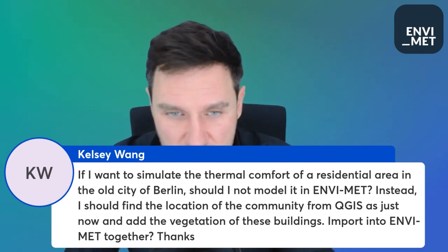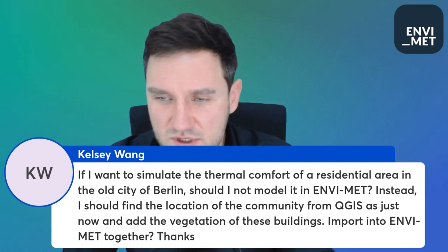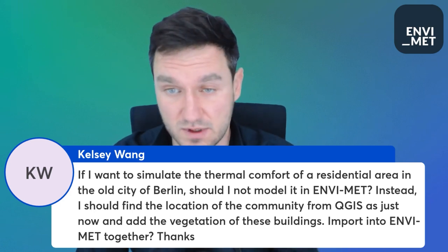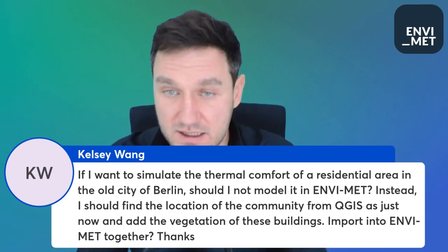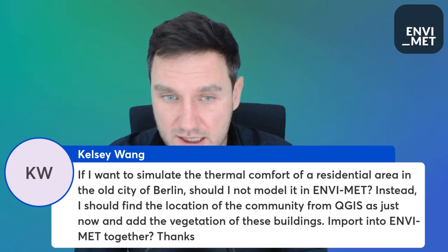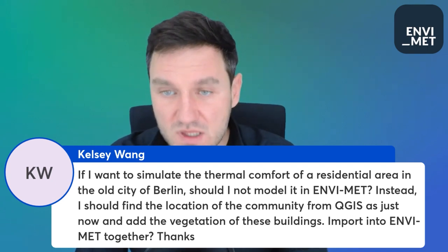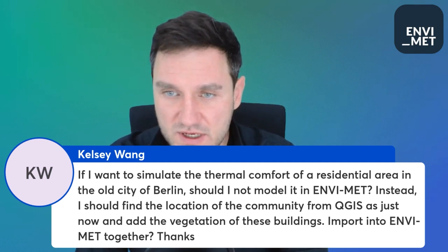Question: If I want to simulate the thermal comfort in the old city of Berlin, should I find the historical location data from QGIS? Yes, that's possible. In QGIS you can find forums and databases that have historical information about cities. Berlin is one example where lots of data is available — there's even a timeline in some sources going back to around 1920. We also have a model of ancient Rome at around 200 CE, and you can use it to simulate the urban climate of ancient Rome.